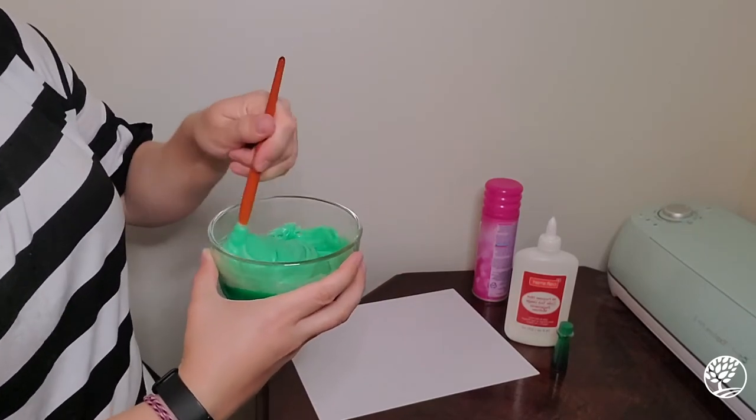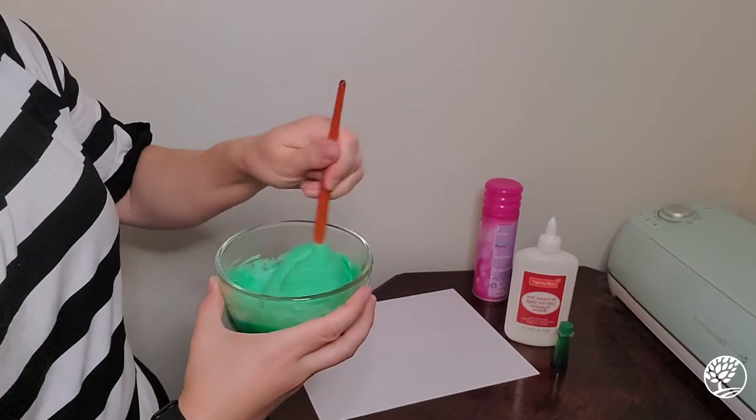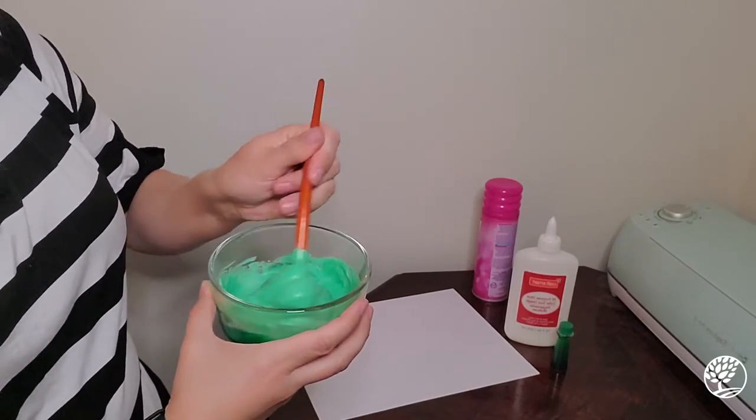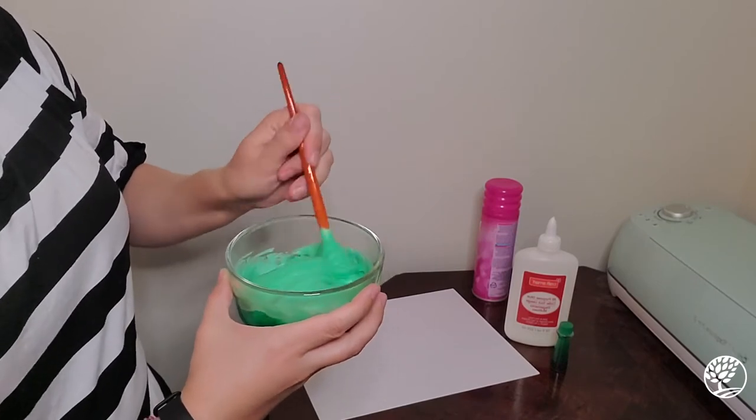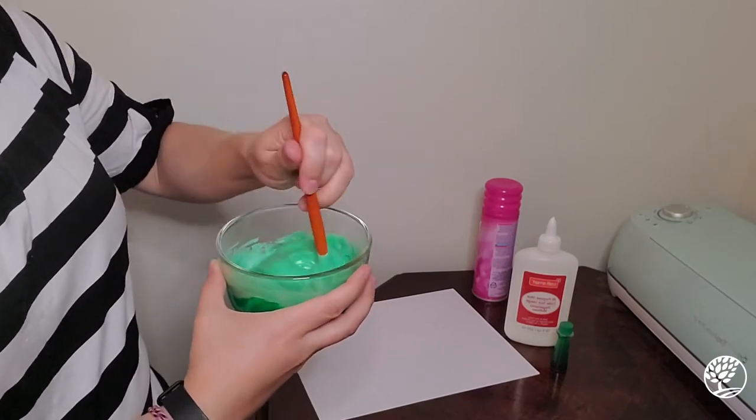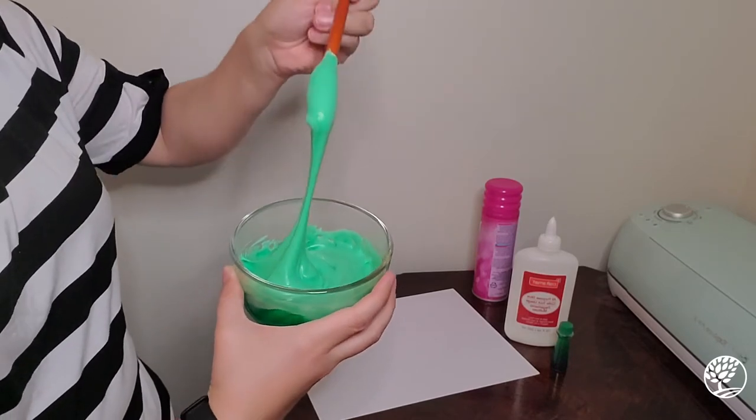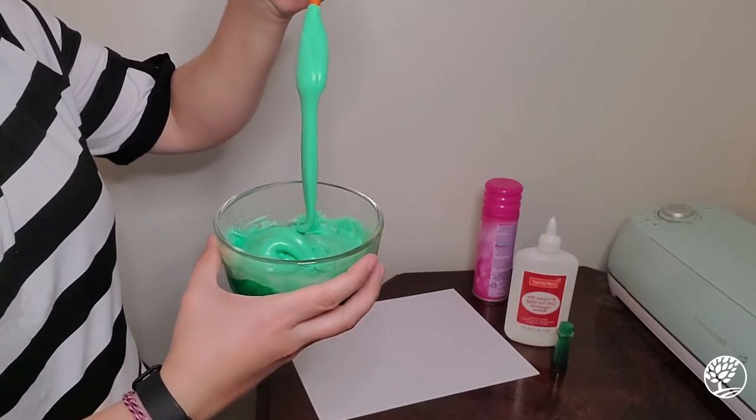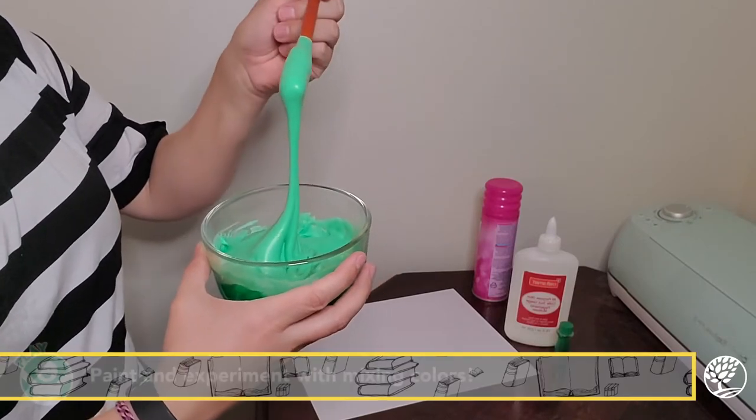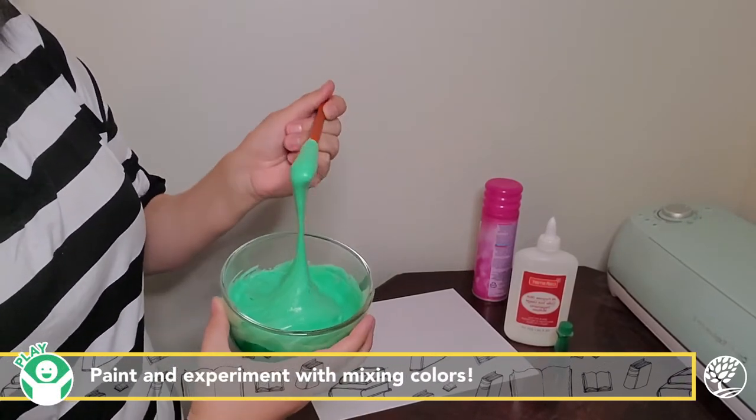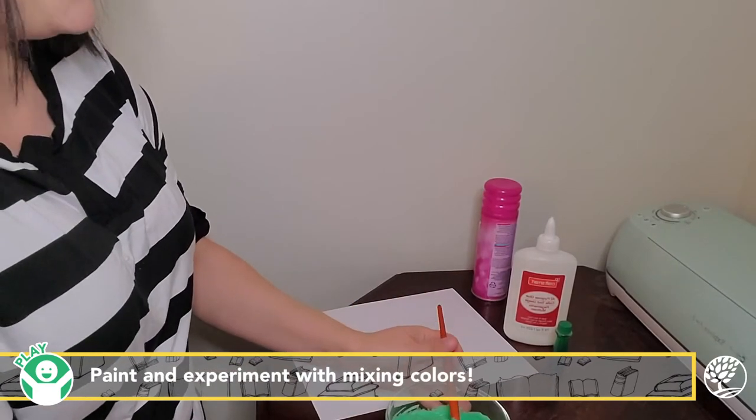So the thing that makes this work is the combination of the shaving cream and the glue. They kind of bind together and once the glue dries it dries the shaving cream too but leaving the structure of it, so you get that puffiness just really easily. So there we are. Yeah this will be much more fun to paint with than just the colored glue. All right so now we're ready for our actual painting.